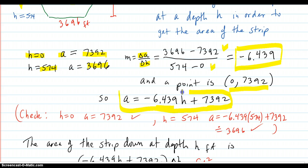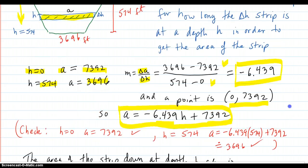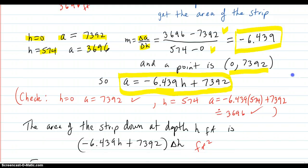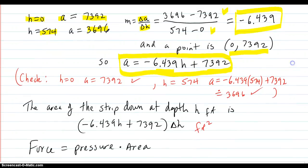It tells you how wide the area strip is going to be at a depth of h. And then you always check it just to make sure. When h is zero, you're supposed to be at the top. So you plug a zero in for h. Yeah, you're at 7,392. Check.